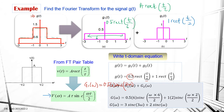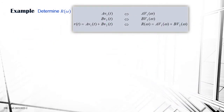G(ω) is the summation of G1(ω) and G2(ω) in the frequency domain. The first signal contributes A×τ×sinc(ωτ/2) with its respective values, and the second signal contributes A×τ×sinc(ωτ/2) with A=1 and τ=2. Simplifying the equation gives the final Fourier transform of g(t), which is G(ω).